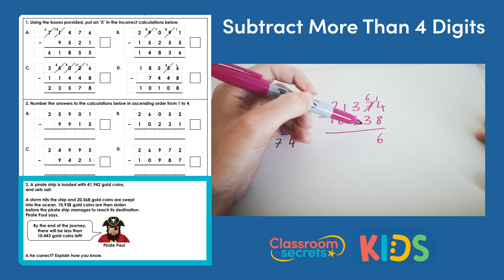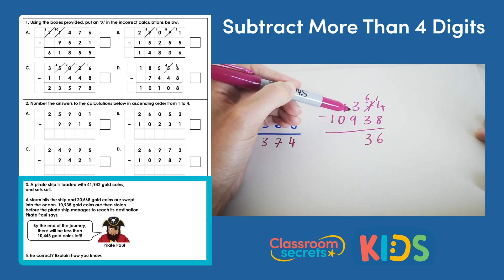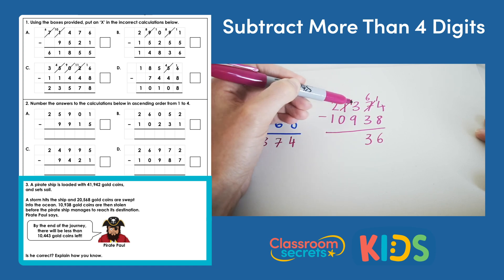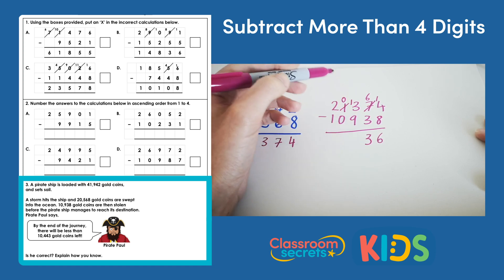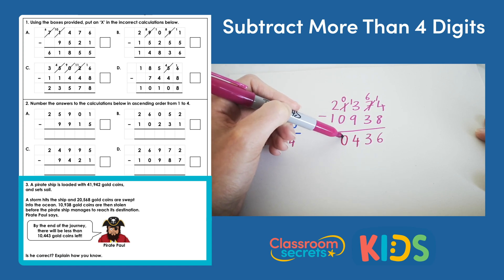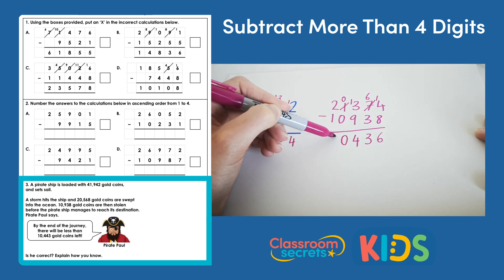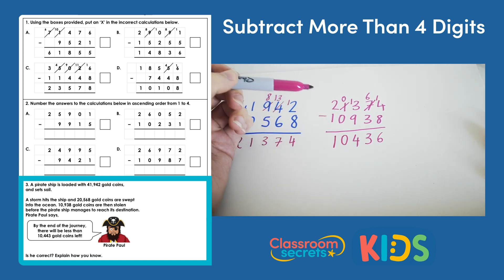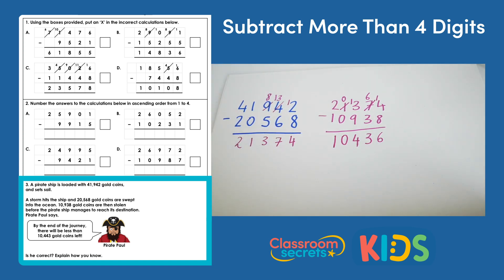6 subtract 3 is 3. 3 subtract 9 — we can't do, so we must exchange; 13 subtract 9 gives us 4. 0 take away 0 is 0, and 2 subtract 1 is 1. So by the end of the journey Pirate Paul has 10,436 coins left — quite a lot to lose!